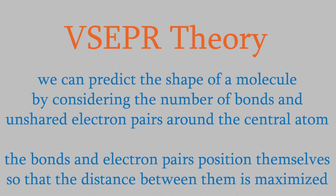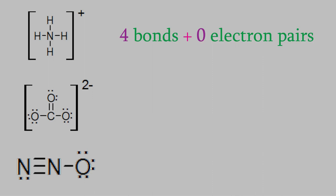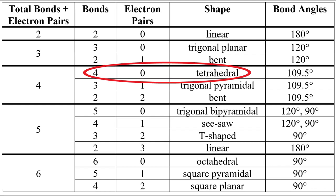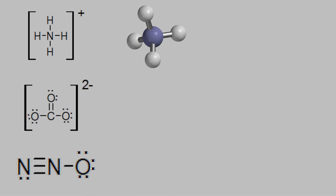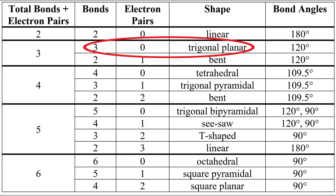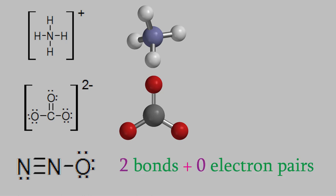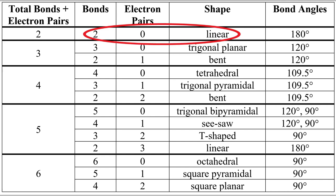Now that we know that, we can use VSEPR theory to find the shapes of some molecules we used in previous videos. Here are three molecules and ions that we saw when we were learning how to draw Lewis structures. In NH4+, the central atom has four bonds and no electron pairs, which means it has a tetrahedral shape and all the bond angles are 109.5 degrees. Meanwhile, the carbonate ion has three bonds and no electron pairs on the central atom, so the bond angles will be 120 degrees and it has a trigonal planar shape. Finally, dinitrogen monoxide has two bonds and no electron pairs on the central nitrogen, so it's a linear molecule with a bond angle of 180 degrees.